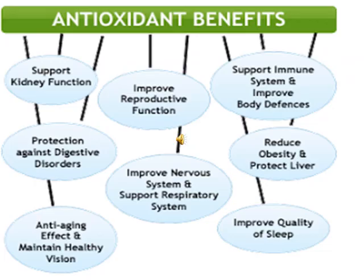This figure shows the antioxidant benefits. They support liver and kidney function, the digestive system, and maintain healthy vision. They improve reproductive and nervous system function and support the respiratory and immune systems. They help reduce obesity and improve body defenses. The daily requirement of dietary antioxidants from a balanced diet with adequate fruits and vegetables — ranging from 500 to 600 grams per day — will probably be enough to take care of oxidant damage and repair cellular and tissue defects.